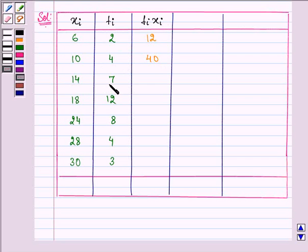14 into 7 gives us 98, 18 into 12 gives us 216, 24 into 8 gives us 192, 28 into 4 is 112 and lastly 30 into 3 gives us 90.